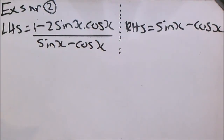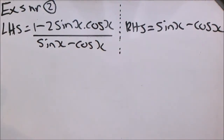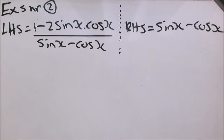This is a very nice section for mathematics. I enjoy proving identities very much. We will have another video on this. We have another three examples — this is from exercise 5, number 2, number 4 and number 10 from the Via Africa textbook.